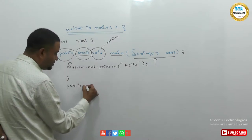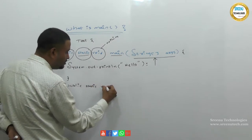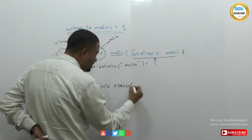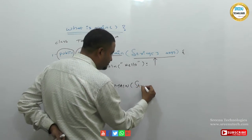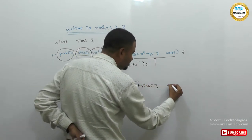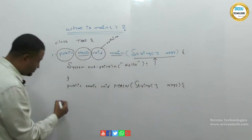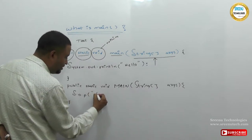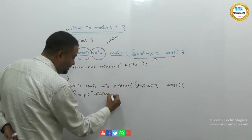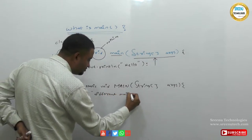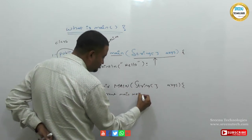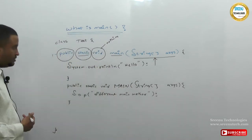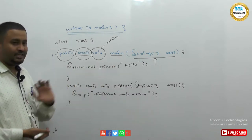I am writing one more method: public static void main, and my method name is main, taking a string array args. Here I am printing some message: System.out.println 'different main method'. Can we take more than one main method in our class?